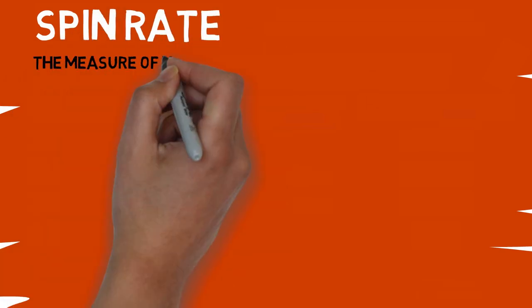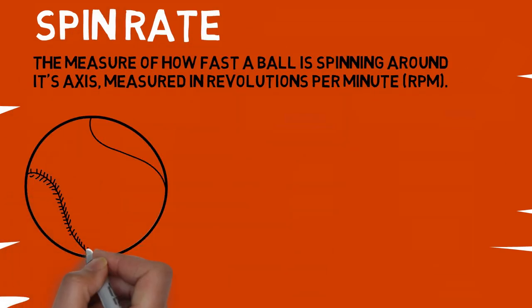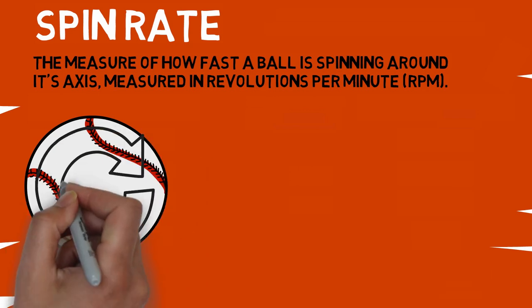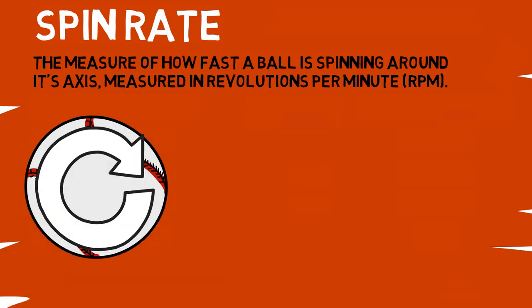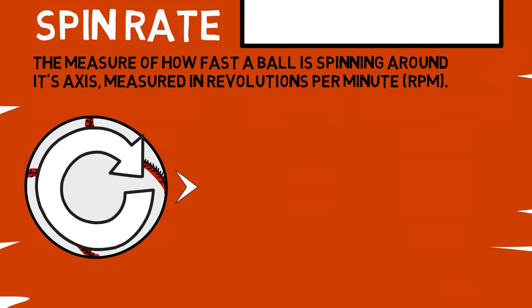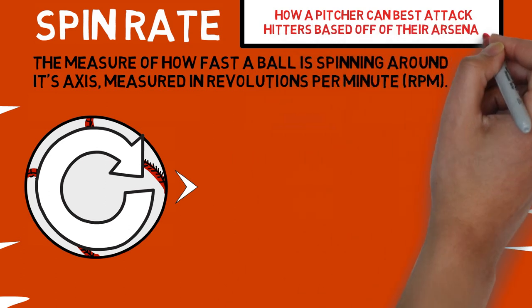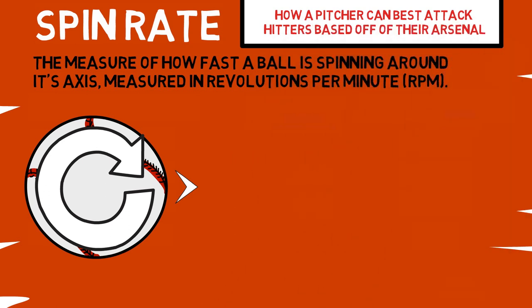Spin rate is defined as the measure of how fast the ball is spinning around its axis, measured in revolutions per minute, or RPM. In slow motion, it simply takes into account the number of times a pitch completes a full rotation on its path to the plate, then divides that by the fraction of minutes it takes for the pitch to reach the catcher's glove. This is important because it helps you understand what ways a pitcher can best attack a hitter based on their arsenal. Spin rate isn't something that can be trained without illegal substances, so it truly acts as a fingerprint for how guys can best use their stuff.